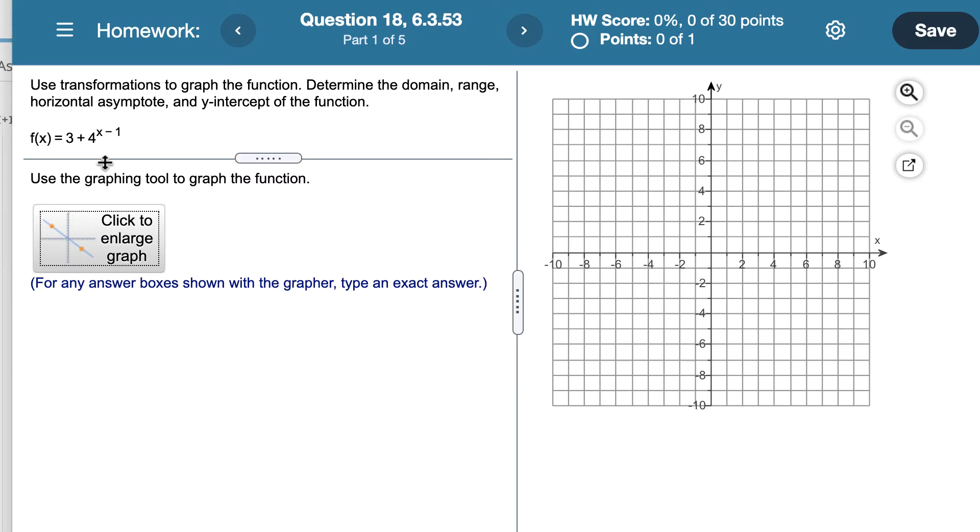This problem is asking me to graph f(x) = 3 + 4^(x-1). When I look at this equation, the base of my exponential is 4. I have a vertical shift up three units, and then I'm going to have a horizontal shift to the right one unit.